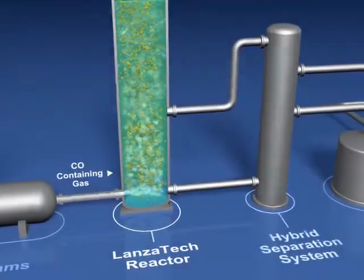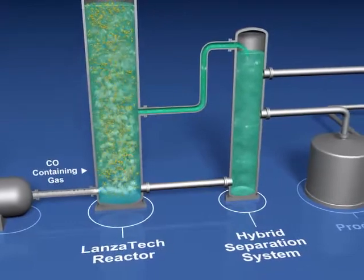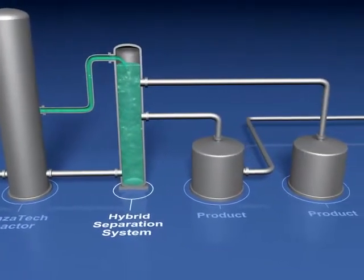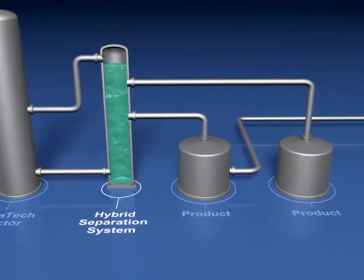Next, the net product is withdrawn and sent to the product recovery section. The product recovery section uses an advanced hybrid separation system to recover the valuable products and co-products from the fermentation broth.